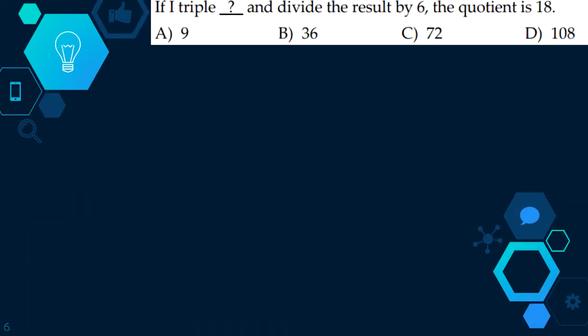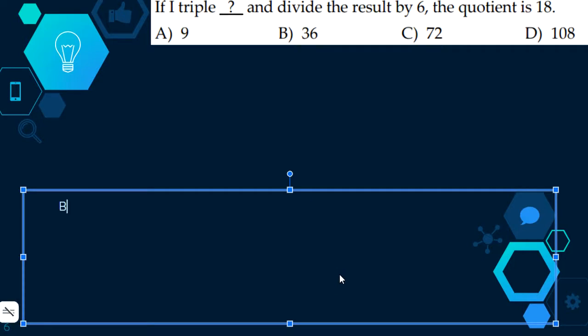Our next question is, if I triple blank and divide the result by six, the quotient is eighteen. We just work this question backwards. The quotient is eighteen because they divided it, so we just multiply eighteen and six. We get a hundred and eight, and it's just triple, which is times three. So we divide that hundred and eight by three, and we get thirty-six. So our answer would be B, thirty-six.